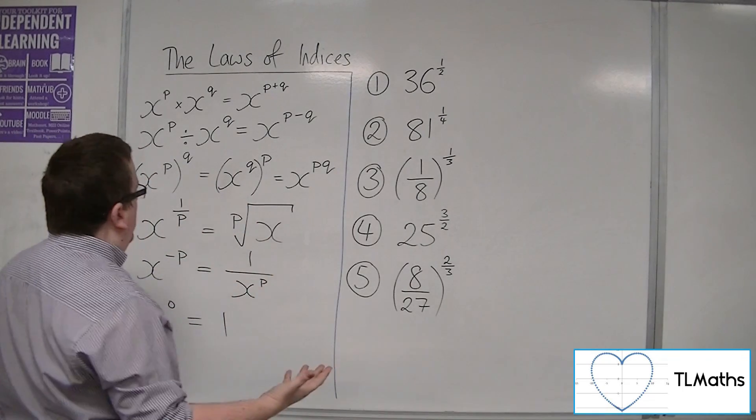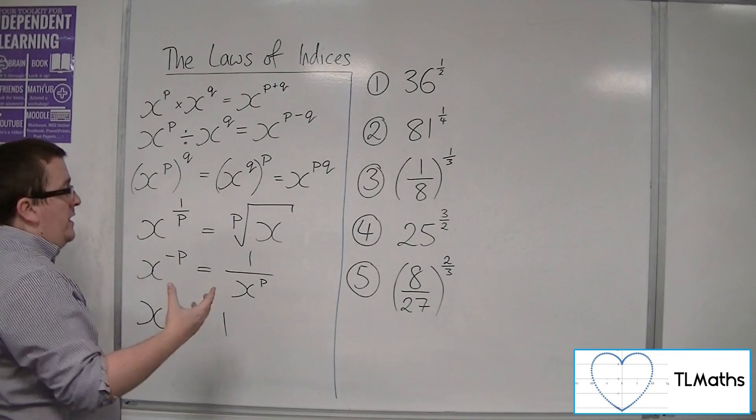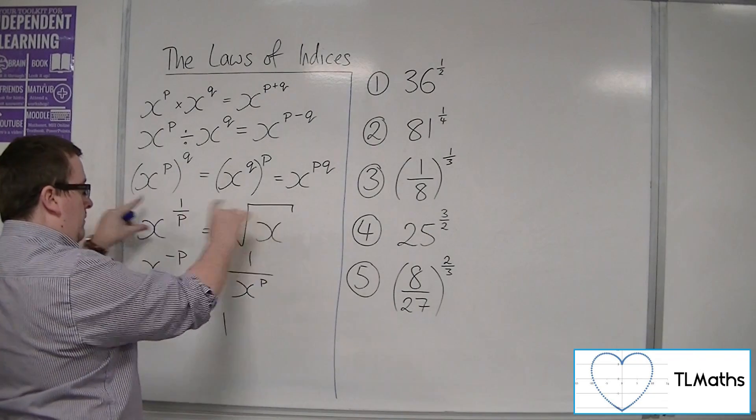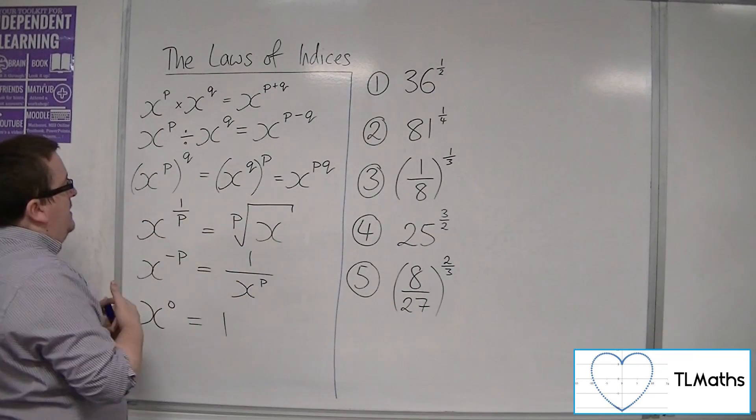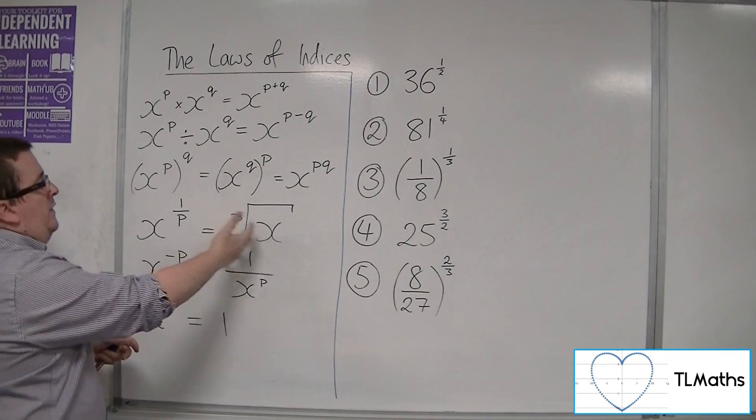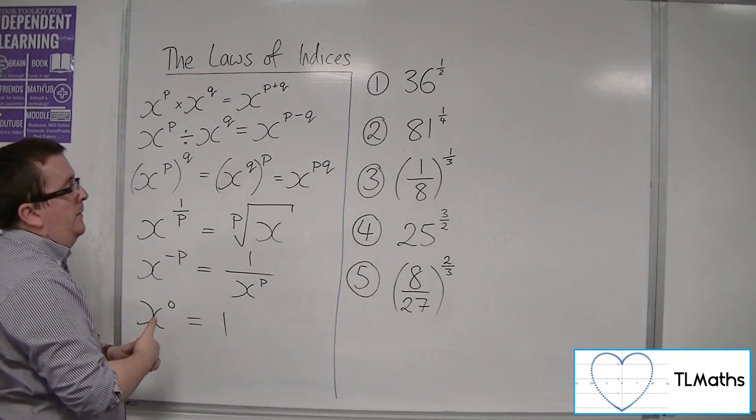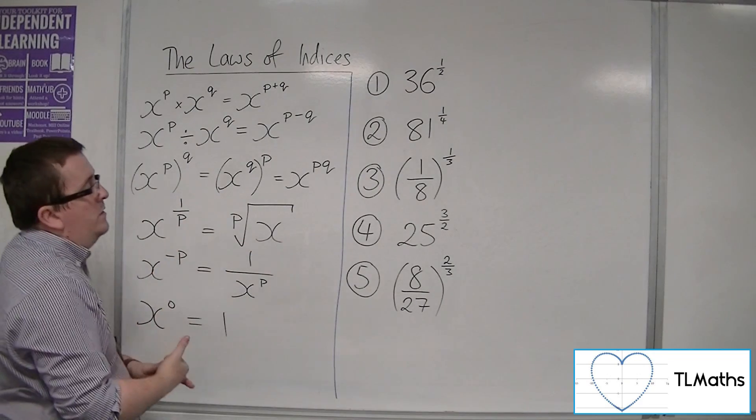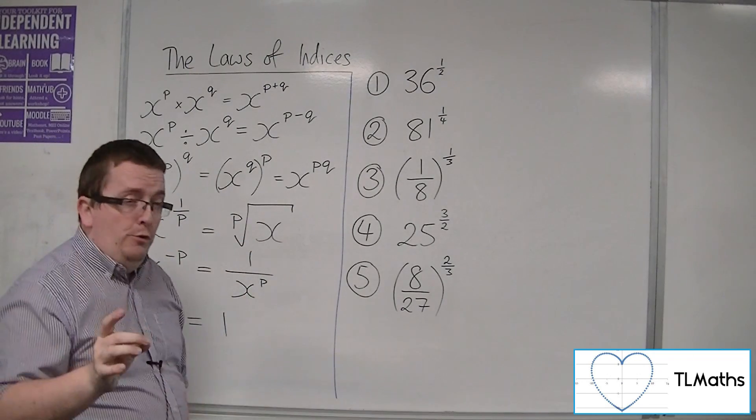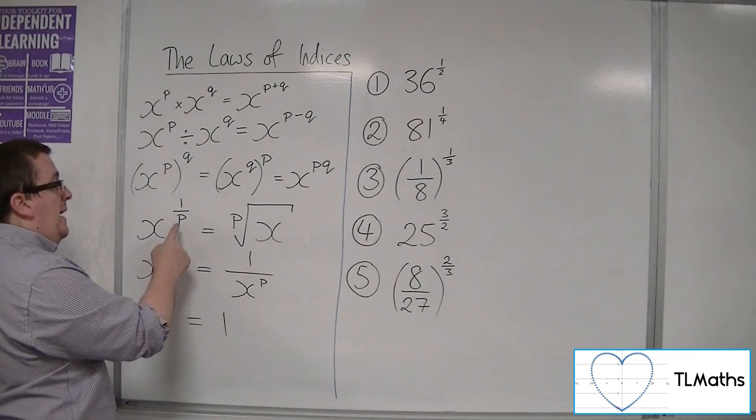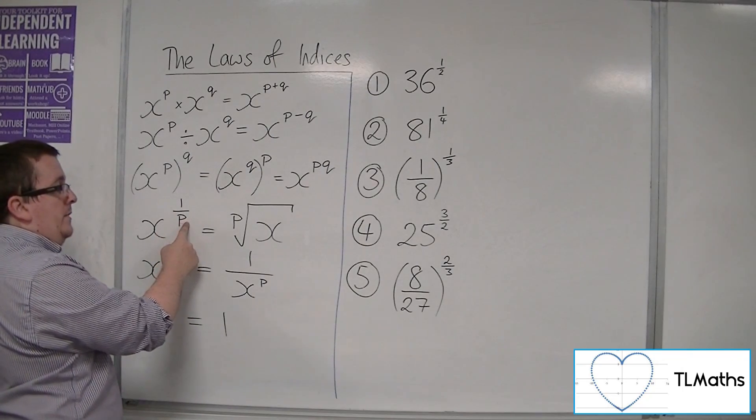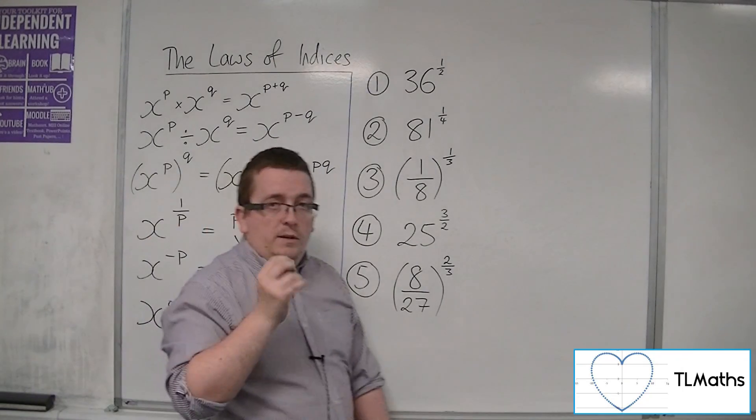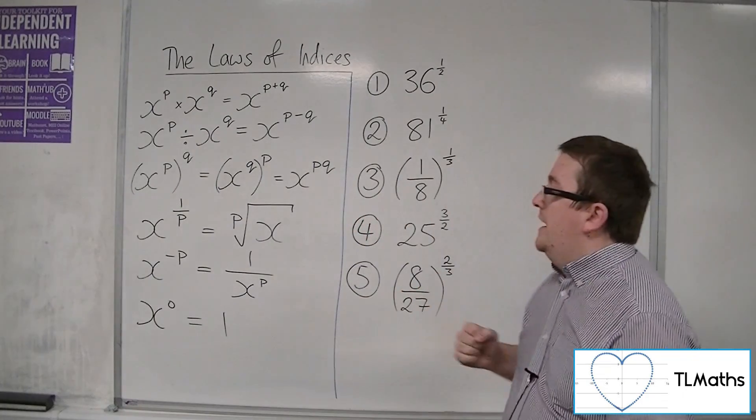Then what we're going to be utilizing in the majority of cases is this bit here. This x to 1 over p is the p-th root of x. Now, you'll notice that not in every case will we have 1 over a value, so we're going to have to use a little bit of ingenuity to get around that problem.